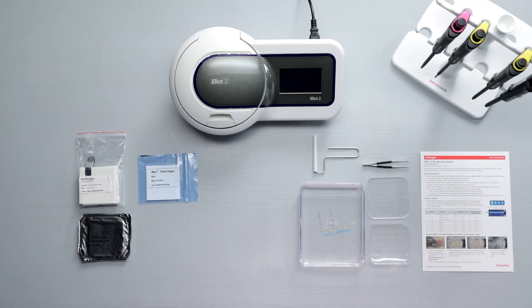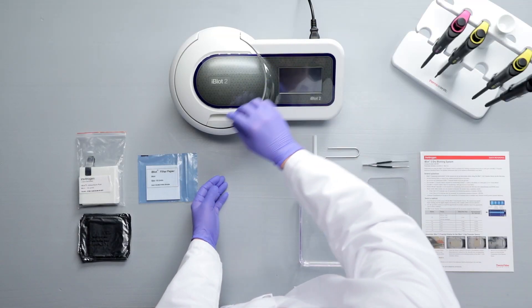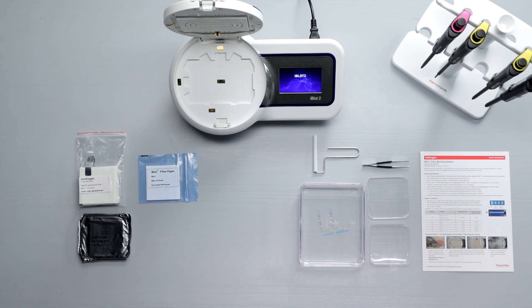To get started, turn on the iBlot2 Dry Transfer Device and open the lid. The digital display will show icons for the available actions.